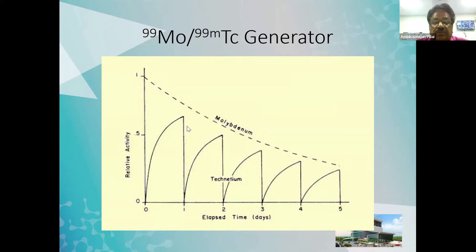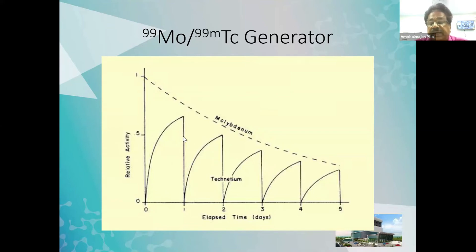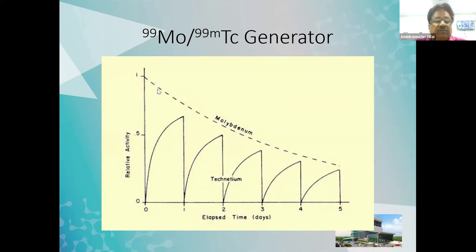When we are getting the generator initially, maybe all the cardiac studies and bone studies we will schedule in the first two or three days. On those days, we can also do DMSA, DTPA, and all other things. But towards the end of the week, we are probably confined to studies done with a smaller amount of activity. Planning the generator and planning the work is an important activity of the radiopharmacist as well as the nuclear medicine physician.